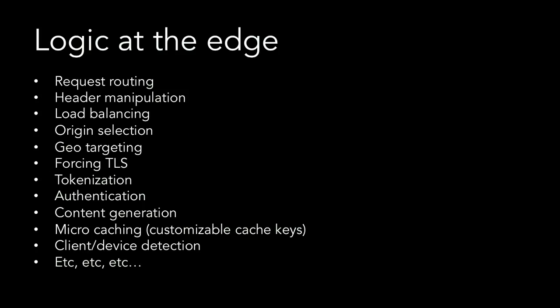When we talk about logic at the edge, there are lots of examples: everything from request routing, header manipulation, and load balancing, to geofencing, tokenization, and authentication — anything that falls under logic we can run close to our users. Device detection, micro-caching, configurable cache keys. For example, someone cached hotel search results based on latitude and longitude, so for the same URL you get different results if you're making your request from Penn Station in New York versus Central Station in Baltimore. That's an example of running logic and having control over content at the edge. And it all has to be instantaneous — if you're going to code things for the edge, you better be able to deploy that code quickly.